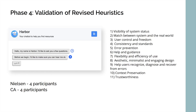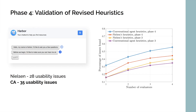So in phase four, we went back to the heuristics and revised them based on the results of the phase three heuristic evaluation. We then conducted another round of heuristic evaluation with eight participants just on the chatbot interface to determine which were more effective in finding usability issues. In this fourth phase, we found that the conversational agent heuristics, once revised, were able to find more usability issues with the chatbot interface.